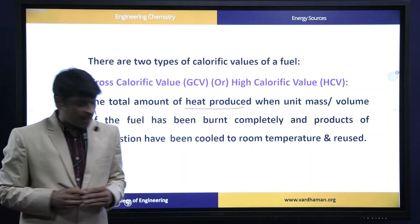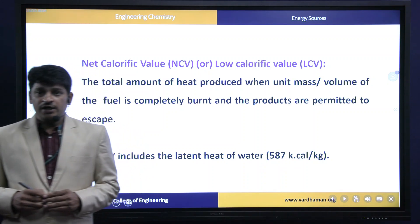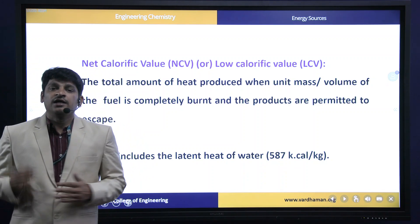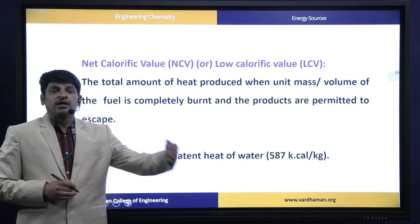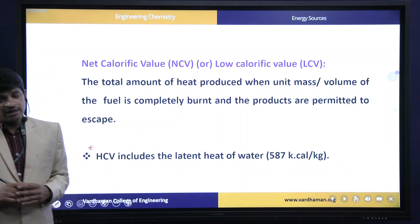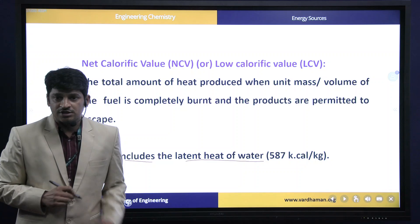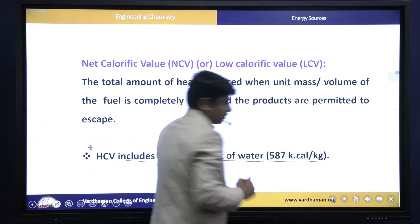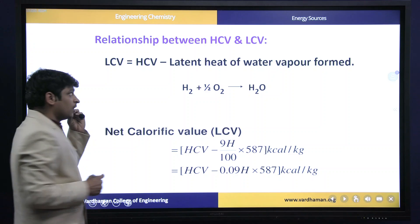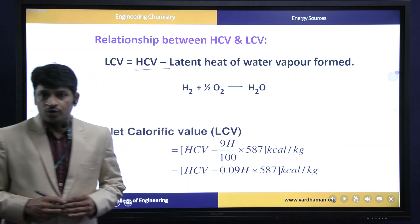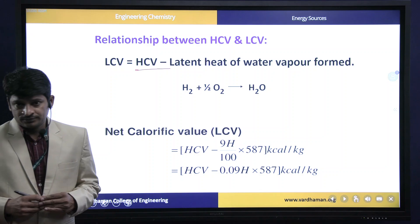Net Calorific Value (or Low Calorific Value) is the amount of heat produced when a unit mass of fuel is completely burnt but the combustion products are allowed to escape, so their heat is not considered. The key difference: High Calorific Value includes the latent heat of water vapor (standard value: 587 kcal/kg), while Low Calorific Value does not. The relation is: LCV = HCV − latent heat of water vapor formed.